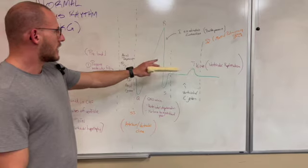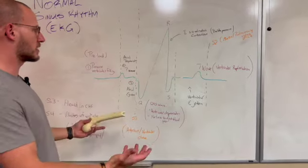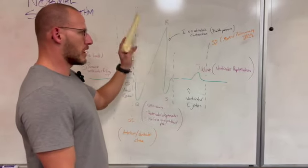And so after that happens, we have ventricular ejection. So that's basically the ventricles are now ejecting into the rest of the body and up the aorta and everything.